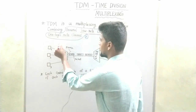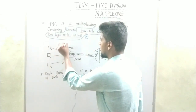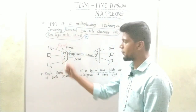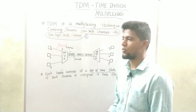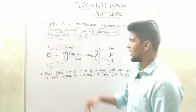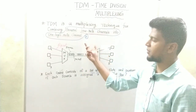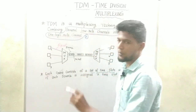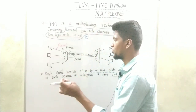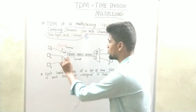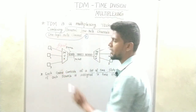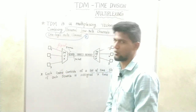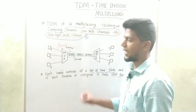What does the multiplexer do? In this time division multiplexing, this is time-based. We will allocate a time slot — why do we allocate a time slot? Each device gets a dedicated time slot.